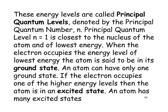These energy levels are called principal quantum levels, denoted by the principal quantum number N. N equals 1 represents the shell closest to the nucleus, with the lowest energy. When the electron occupies this lowest energy level, the atom is said to be in its ground state. For hydrogen, when the electron is in the 1s level, the hydrogen is in its ground state. If the electron occupies a higher energy level, the atom is in an excited state, and an atom has many possible excited states.